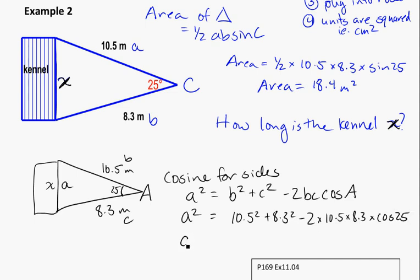And so a is going to be equal to the square root of all of that. So a² is equal to roughly 21.16. So a is going to be equal to the square root of that. Remembering that you have to take your square root in your last step, which will get you 4.6 meters.